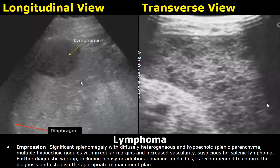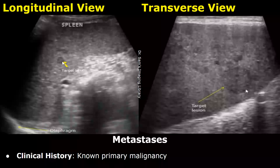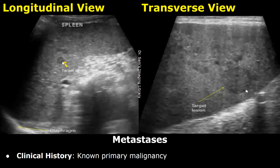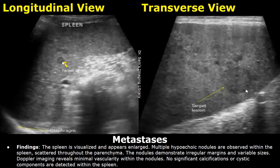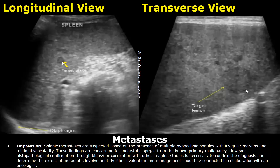Here is a case of splenic metastasis. The clinical history was a known primary malignancy. In the findings, the spleen was enlarged and multiple hypoechoic nodules are observed scattered throughout the splenic parenchyma. The nodules demonstrate irregular margins and variable sizes. Doppler imaging reveals minimal vascularity within the nodules. In the impression, you can write the findings and also mention the history of primary malignancy, and advise biopsy and further evaluation with other imaging modalities.